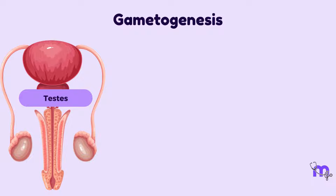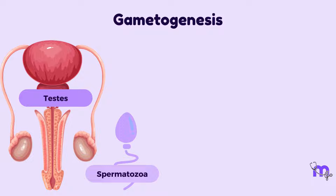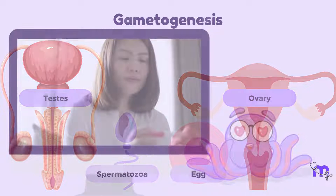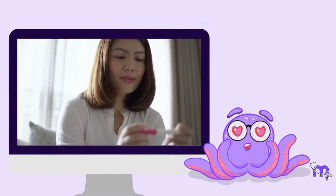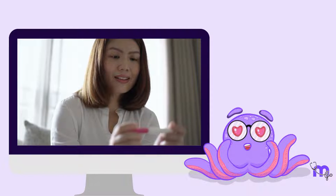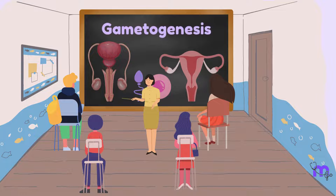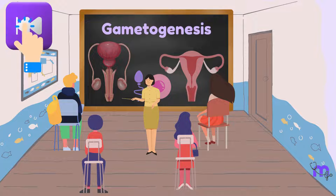Within the testes of males, spermatozoa are formed. In females, the ovaries nurture and release eggs, each promising the possibility of conception. The entire process of gametogenesis has been discussed in the previous session.